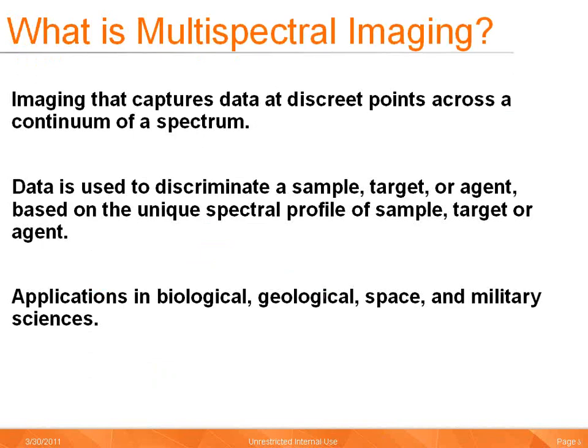What is multispectral imaging? In the most general terms, multispectral imaging is imaging that captures data at discrete points across a continuum of a spectrum. The data collected is then used to discriminate a sample, target, or agent based on the unique spectral profile of the sample, target, or agent. Multispectral imaging has applications in biological, geological, space, and military sciences.